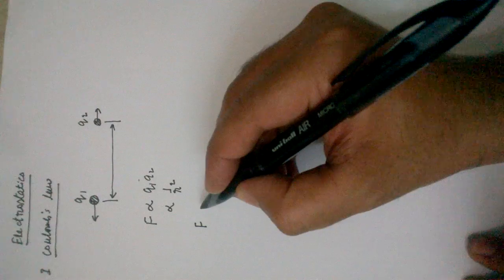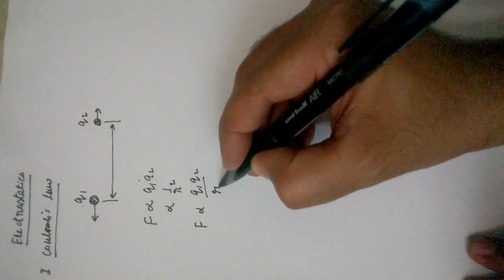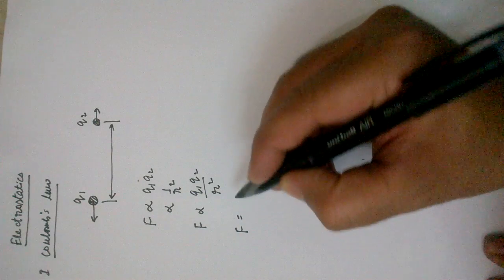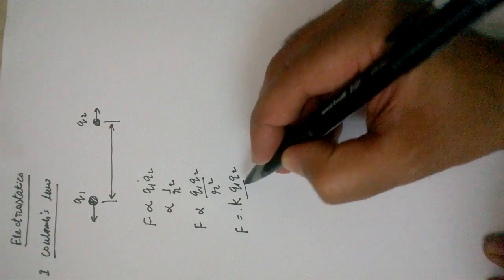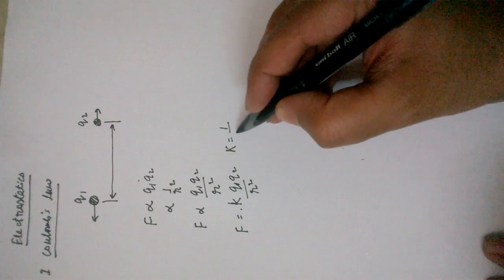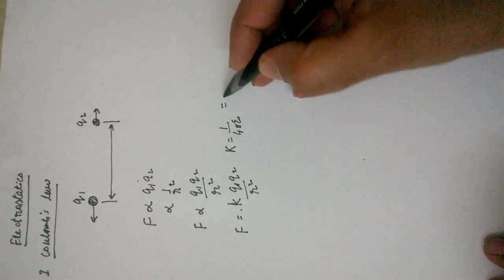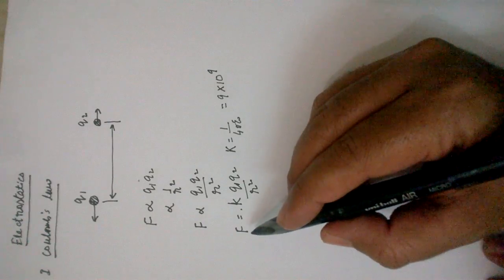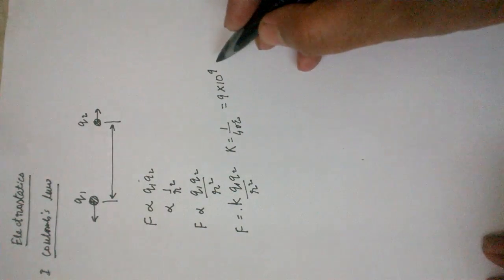Combining this, force is proportional to the product of charges divided by distance squared. The constant of proportionality is K, where K equals 1 by 4 pi epsilon 0. In the SI system this equals 9 into 10 raised to the power 9. Looking at the units: F into R squared gives Newton meter squared, and the charges give coulomb squared, so the units are Newton meter squared per coulomb squared.